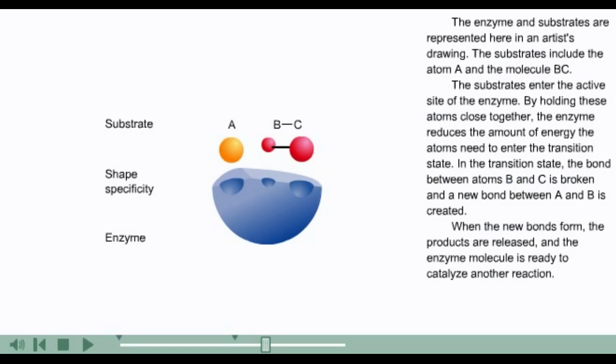The enzyme and substrates are represented here in an artist's drawing. The substrates include the atom A and the molecule BC. The substrates enter the active site of the enzyme. By holding these atoms close together, the enzyme reduces the amount of energy the atoms need to enter the transition state.